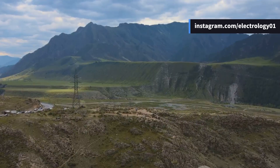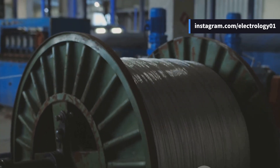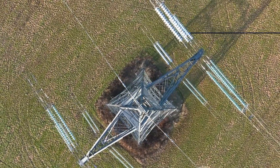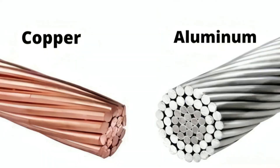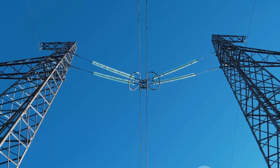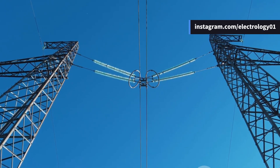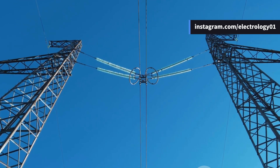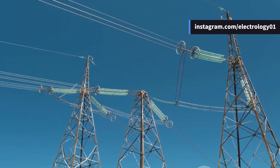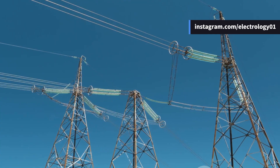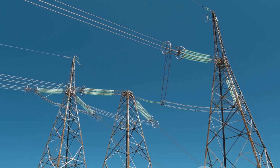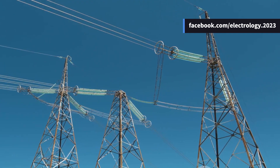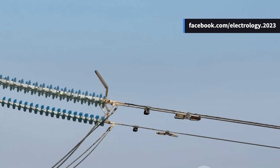However, copper is expensive and not always readily available, which is why aluminium has taken its place in most modern applications. Aluminium is cheaper and much lighter, but it has only about 60% the conductivity of copper, meaning for the same power transmission efficiency the aluminium conductor must have a larger cross-sectional area. To achieve the same resistance, an aluminium conductor needs to be about 1.26 times the diameter of a copper one. Yet aluminium's low specific gravity — just 2.71 g/cm³ compared to copper's 8.9 g/cm³ — means it's nearly half the weight.